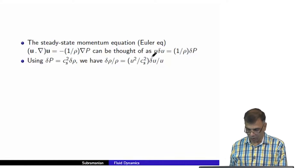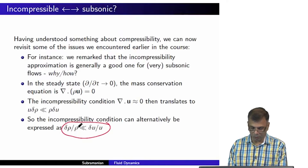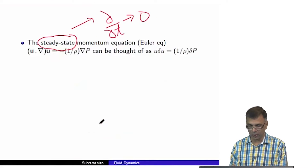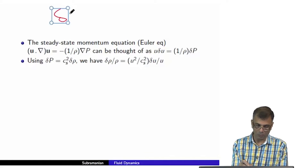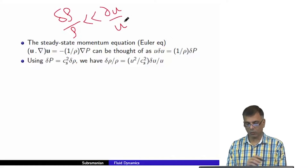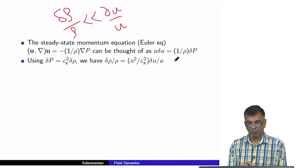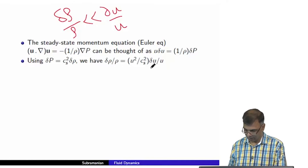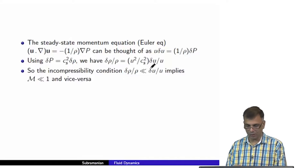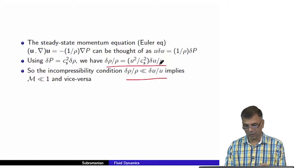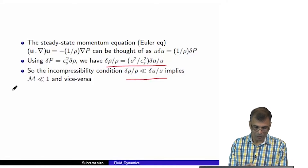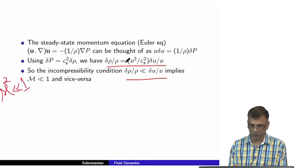We relate del(p) to del(rho) using the sound speed c_s, writing del(p) as c_s² del(rho). After rearrangement, del(rho)/rho equals (u²/c_s²) times del(u)/u. Comparing with the mass conservation result — that del(rho)/rho is much, much smaller than del(u)/u — there is only one way both statements can be simultaneously true.